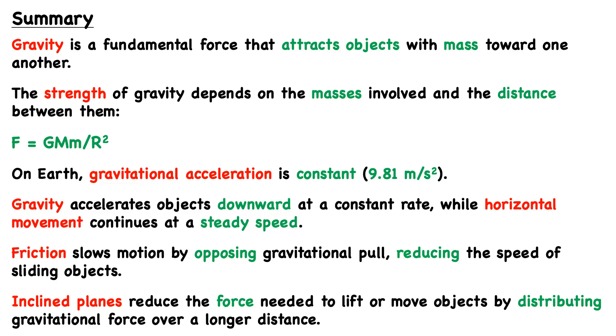The strength of the gravitational force depends on the masses involved and the distance between them. Then we have this equation to calculate the gravitational force between two massive bodies, F = GMm/R².